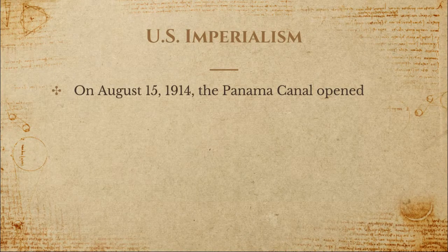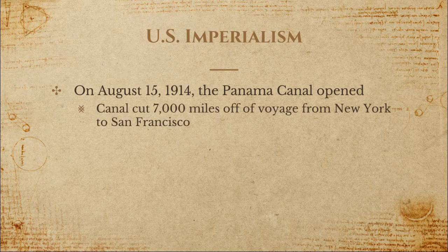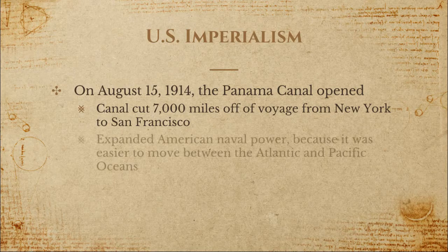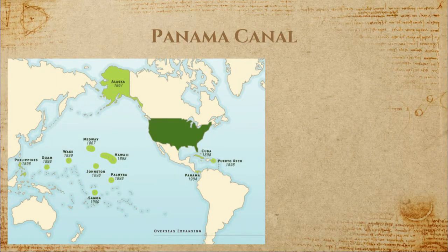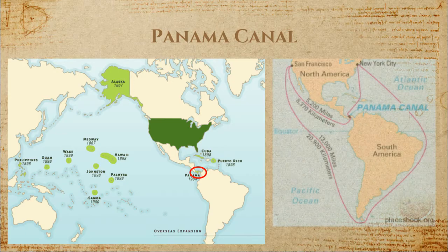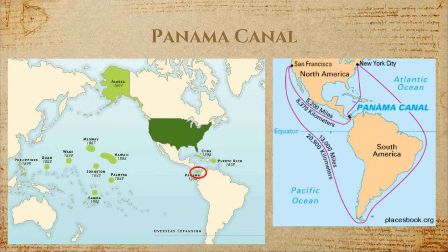The canal took a very long time to build, but it opened on August 15th, 1914. The canal was so important because it cut 7,000 miles off the voyage from New York to San Francisco, greatly expanding American shipping abilities and naval power by making it much easier to move between the Atlantic and Pacific Oceans. The map shows Panama circled in red, and the other map shows the trip length difference — from 13,000 miles to only 5,200 miles — because ships would no longer have to sail all the way around South America. This cut 60% of the mileage off the trip, a major breakthrough.